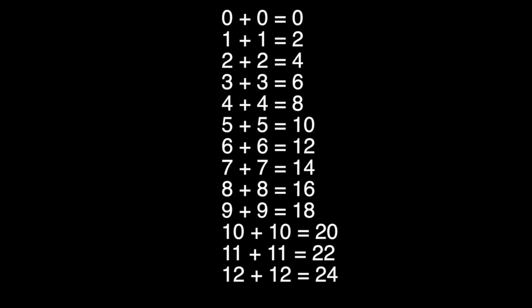If you write out all the doubles facts in order from least to greatest, the sums create a pattern. Did you notice that the sums are all even as you work your way down the list? The sums go up by two. Zero, two, four, six, eight.